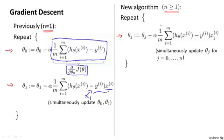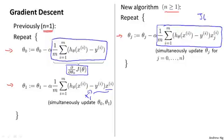And maybe for those of you that know calculus, if you take the definition of the cost function and take the partial derivative of the cost function j with respect to the parameter thetaj, you find that that partial derivative is exactly that term that I've just drawn the blue box around. And if you implement this, you will get a working implementation of gradient descent for multivariate linear regression.